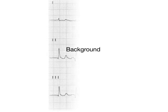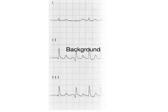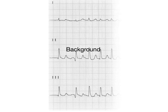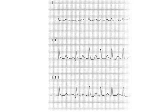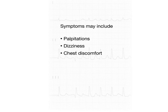Atrial fibrillation is the most common sustained arrhythmia, affecting over 2 million people in the United States. Symptoms may include palpitations, dizziness, chest discomfort, fatigue, and shortness of breath. Atrial fibrillation is also an important cause of stroke.